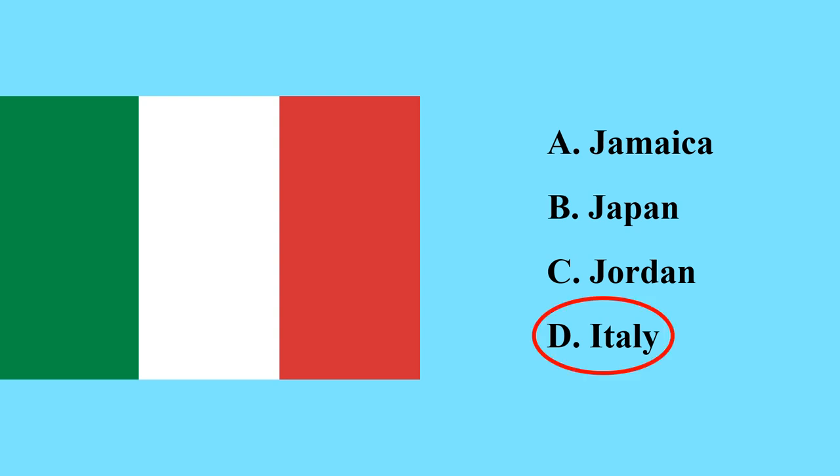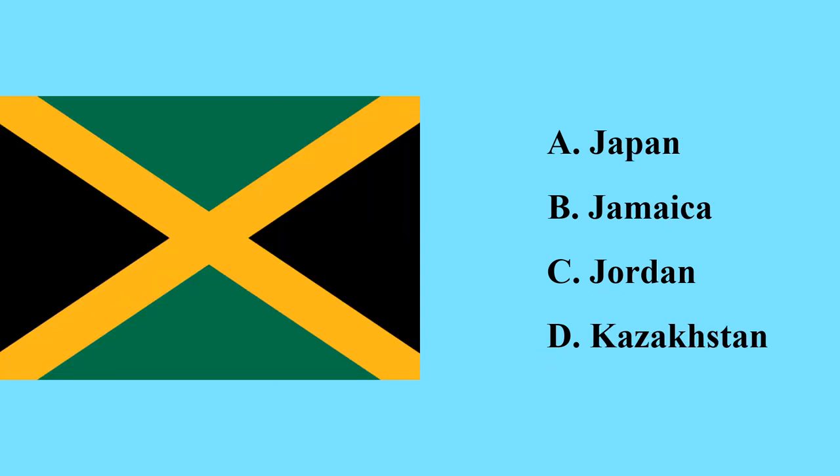This is the flag of Italy — the capital city of Italy is Rome, and Italy is a country in the Mediterranean Sea. This is the flag of Jamaica — it is a country in the Caribbean region in North America.